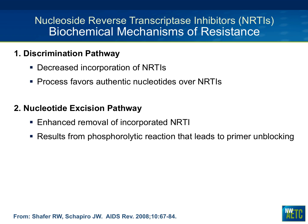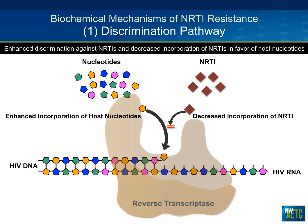Resistance occurs in one of two main ways. There's the discrimination pathway, where the virus decreases incorporation of the NRTI by favoring authentic human nucleotides over the NRTIs. Then there is the nucleotide excision pathway, where the virus excises the already-incorporated NRTI via a phosphorylidic reaction — this leads to what we call primer unblocking. So primer blocking is the mechanism; primer unblocking is the resistance.